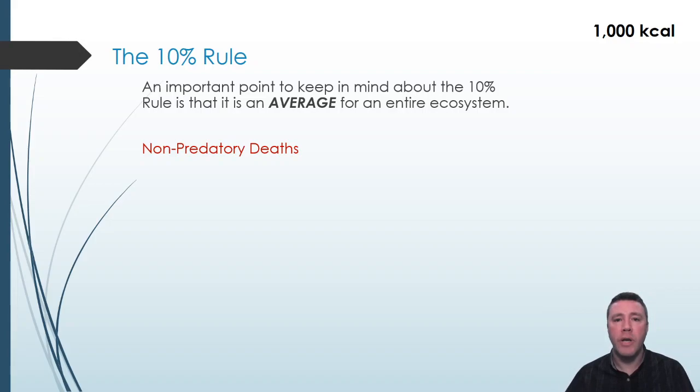The first factor in the 10% rule is called non-predatory deaths. In order for energy at one trophic level to be passed on to the next, an organism needs to be consumed. For example, in order for the energy that a gazelle possesses to be obtained by a cheetah, that cheetah has to capture and consume the gazelle.